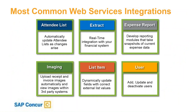The most common web services integrations are as follows — mostly on the expense side, but many of these apply to invoice and travel products as well. Attendee list integration is popular, usually with your CRM, where you can send in the most recent list of attendees for employees to choose from — for example, for a business luncheon, putting clients onto an expense report. The extract API is for financial integration — we recommend this for integrating with your ERP into your general ledger for expense reports. It is produced after a report has gone through each step of the workflow, been processed, and captured within the extract as a 400-field pipe-delimited flat file delivered by the API.